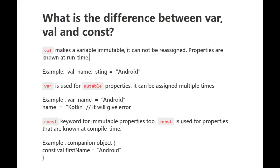The next question is: what is the difference between var, val, and const? We can declare variables with two types, that is val and var. Val declarations are used for immutable types, meaning these values cannot be reassigned. Whereas with var declarations, the variables are mutable and can be reassigned. Const is also of immutable type, but its value will be initialized at compile time. This is the main difference between val and const — val variables are initialized at runtime, whereas const variables are initialized at compile time.